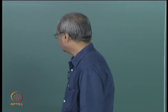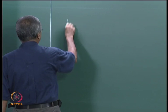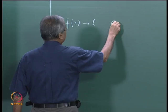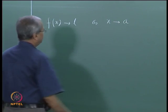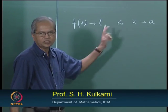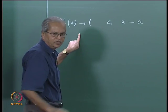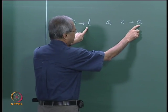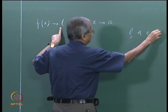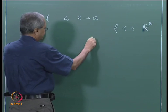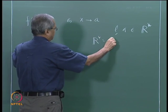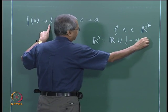We shall continue our discussion about the real valued functions defined on some subsets of the real line, namely the intervals. In the last class we were discussing the meaning of symbols like f tends to l as x tends to a. We have already defined what is the meaning of this when l and a both are real numbers. What we have done is extend the meaning of this idea of the limit by allowing l as well as a to be in the extended real line, which is the usual real line together with the symbols minus infinity and plus infinity.